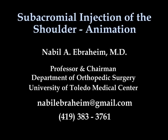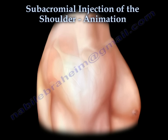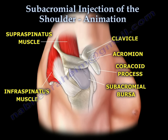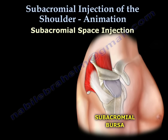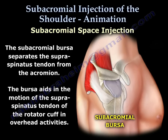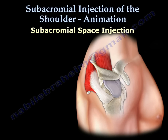This is a subacromial injection of the shoulder animation. You can see the basic anatomy of the shoulder showing the subacromial bursa, the supraspinatus and infraspinatus muscles, the acromion bone, the clavicle, and the coracoid process. The subacromial bursa separates the supraspinatus and infraspinatus tendon from the acromion, and this bursa aids in the motion of the rotator cuff tendons in overhead activity.